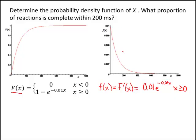So this is what this graph is right here. This is an exponential curve, 0.01e to the negative 0.01x. That's what I've drawn in for you up here.